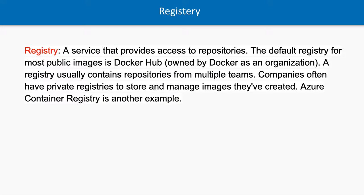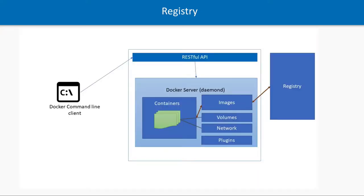A registry is similar to an npm registry or GitHub registry. It is a place that decides the ownership of a particular image available on Docker Hub — who can pull it, what is public, what is private. Docker Hub is currently a public repository; if you make an image public, anyone can download and use it. So a registry is a record of all images available on Docker Hub, which can be public or private.